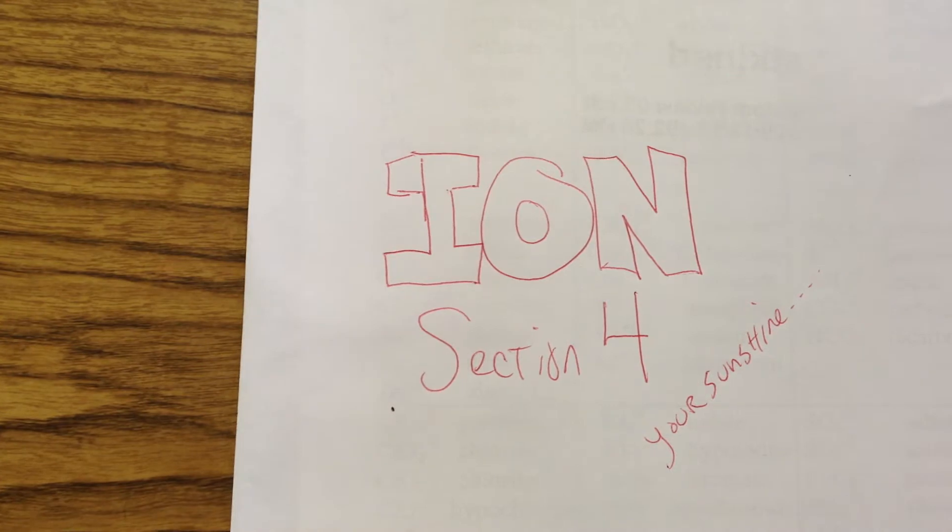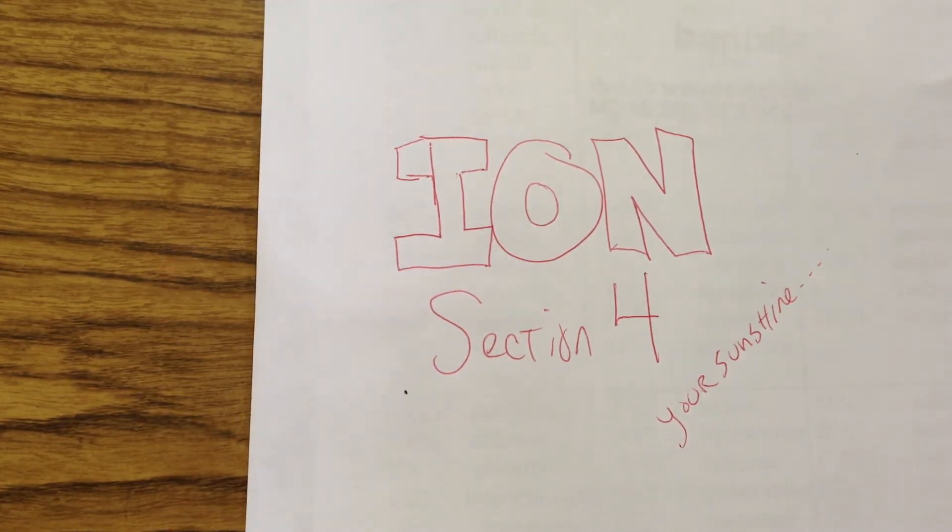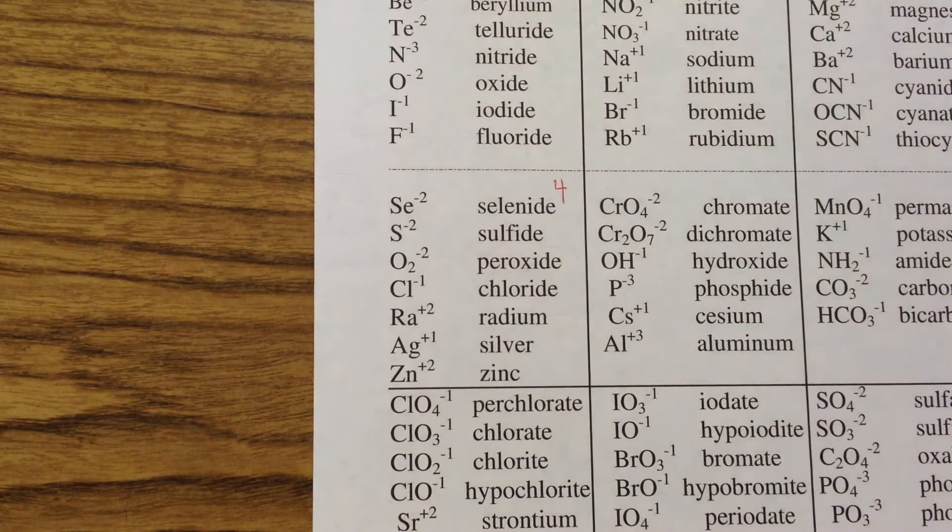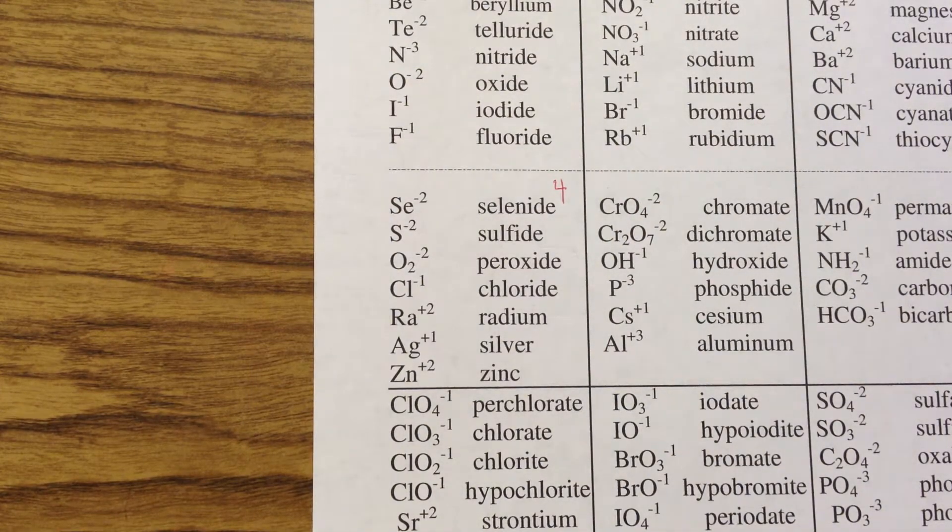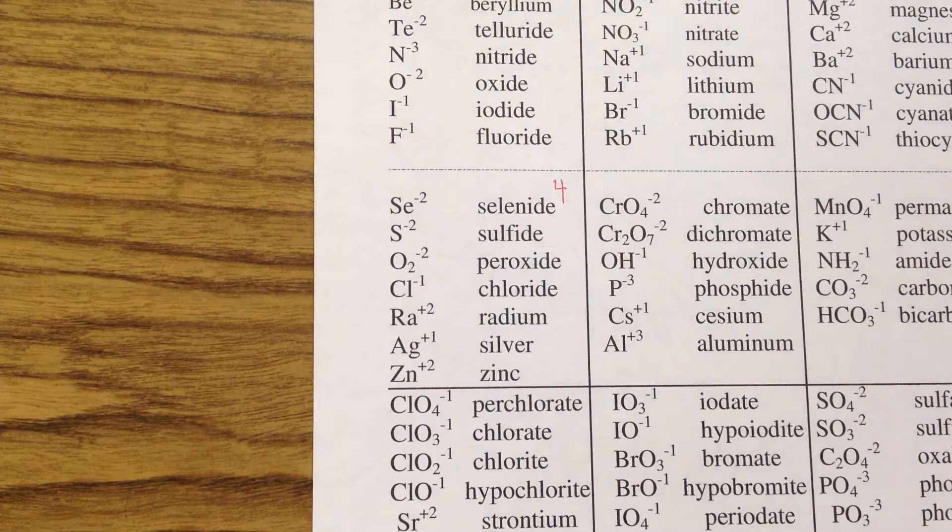Welcome. Today we're going over section 4 on our ion sheet. Section 4 is listed right here. It's the second row left side.